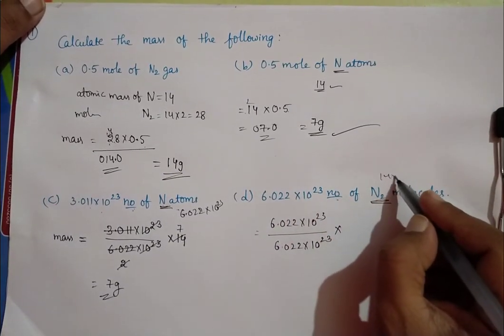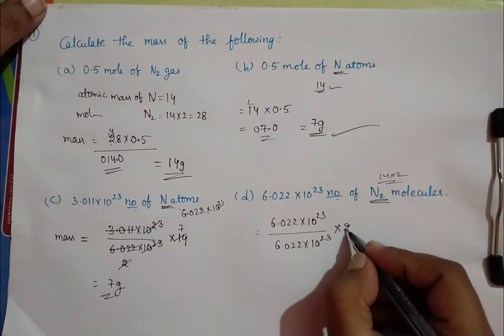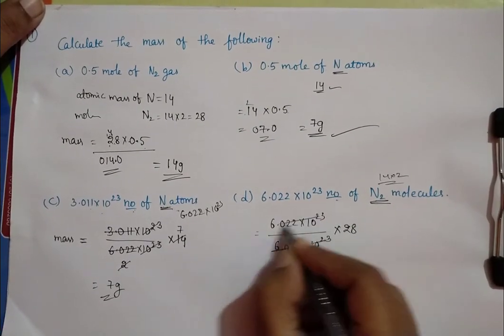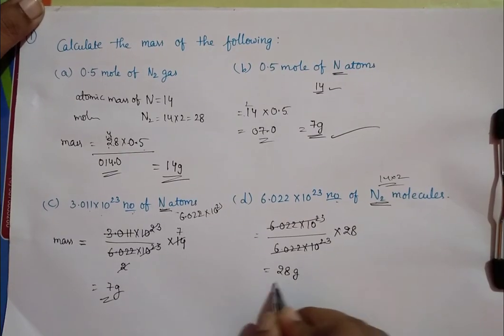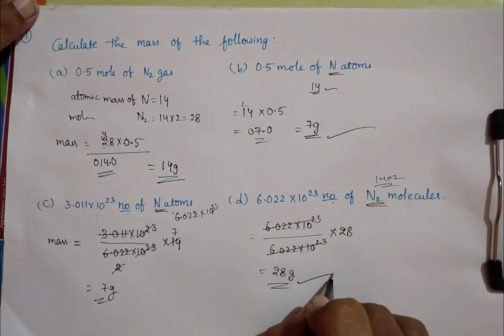N2 is nothing but 14, 2 times. 14 times 2 is 28. This directly gets cancelled. So, answer is 28 grams.